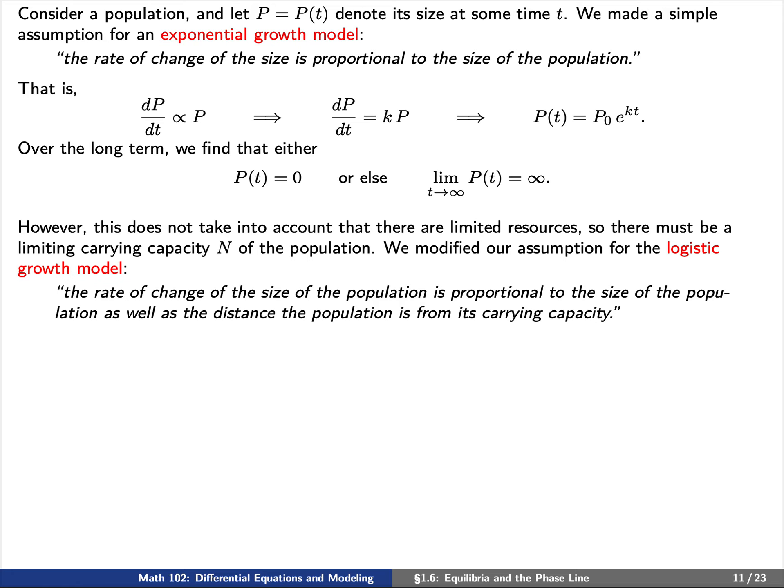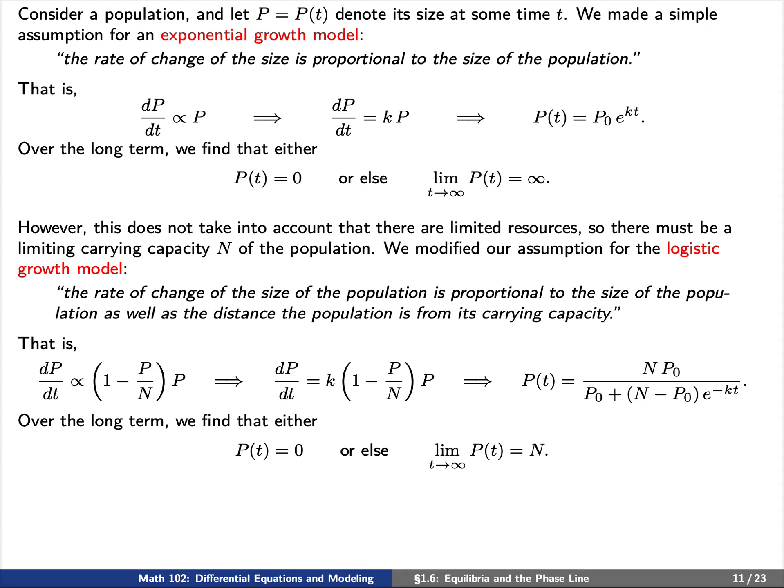However, this does not take into account that usually there are limited resources, so there must be a limiting carrying capacity N for this population. We then modified our assumption for the logistic growth model — the rate of change of the population is proportional to the size of the population as well as the distance of the population from its carrying capacity N. We can express this as: dp/dt is proportional to (1 − p/N) times p, which we can solve explicitly. Over the long term, either the population equals 0 for all time t, or else p tends to the carrying capacity N as t increases without bound.